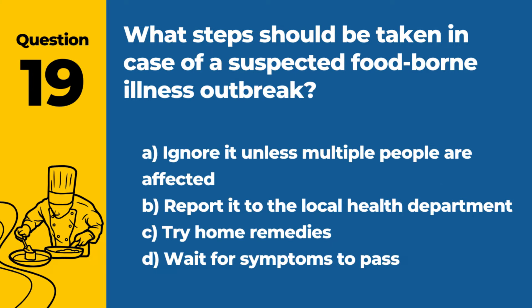Question 19. What steps should be taken in case of a suspected foodborne illness outbreak? a. Ignore it unless multiple people are affected. b. Report it to the local health department. c. Try home remedies. d. Wait for symptoms to pass. Answer b. Report it to the local health department. In case of a suspected foodborne illness outbreak, it should be reported to the local health department for investigation and response.